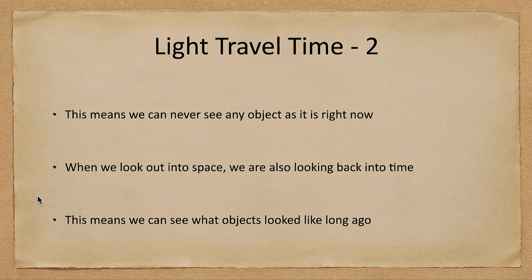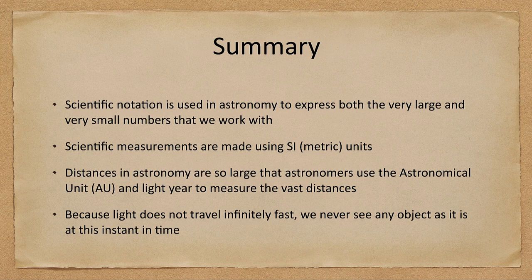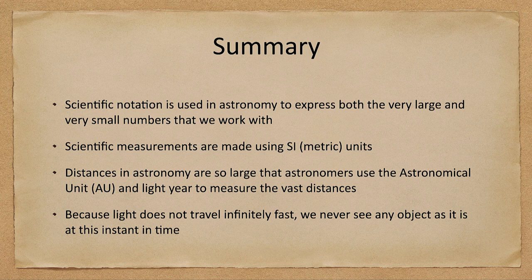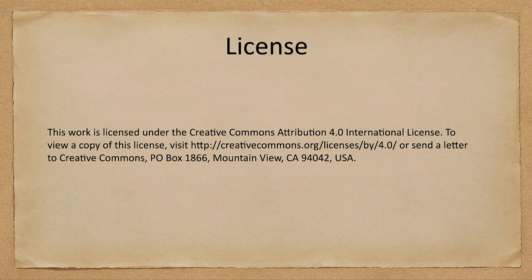Let's finish up with our summary. We talked about scientific notation as a way to express both very large and very small numbers. We talked about scientific measurements being made in the metric system of units. We said that distances are so large that we use things like the astronomical unit and light year to measure these great distances. And finally, we talked about how light not traveling infinitely fast means that we can never see any object as it is at this instant in time. That concludes this lecture on numbers and light travel time. We'll be back again next time for another topic in astronomy — have a great day, everyone.